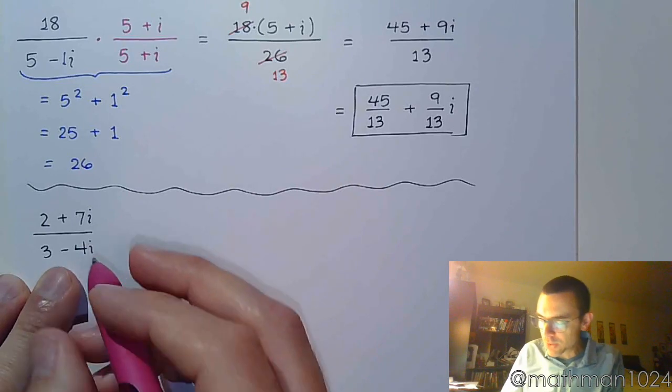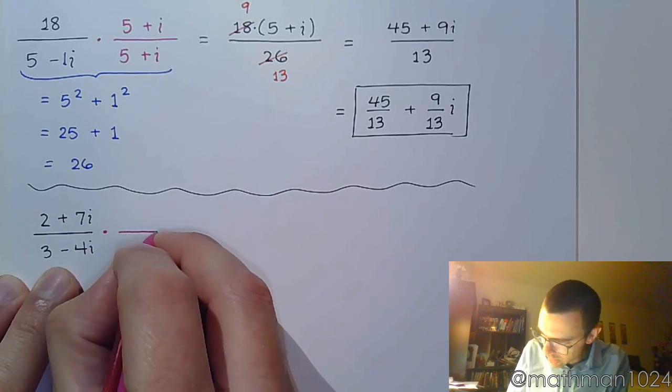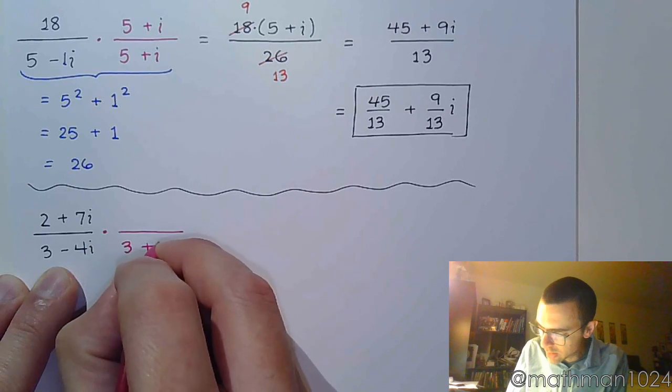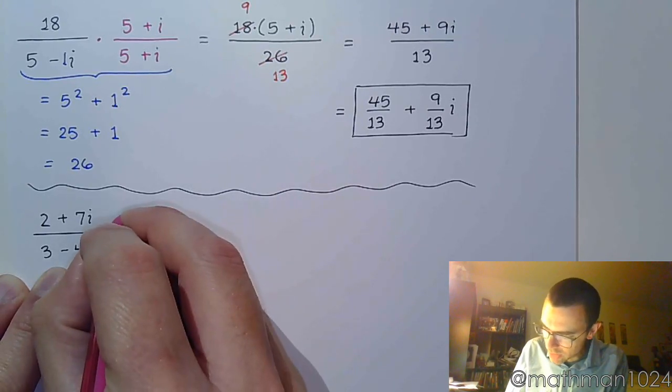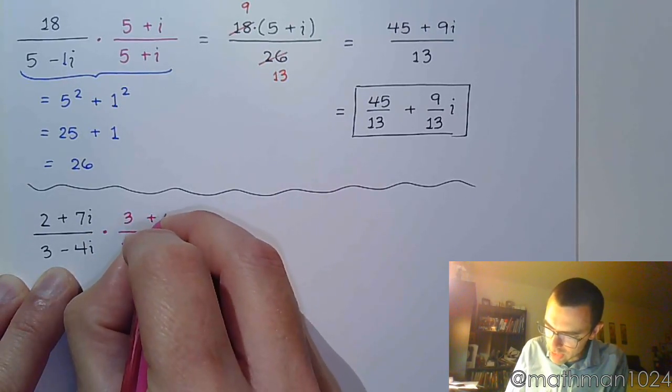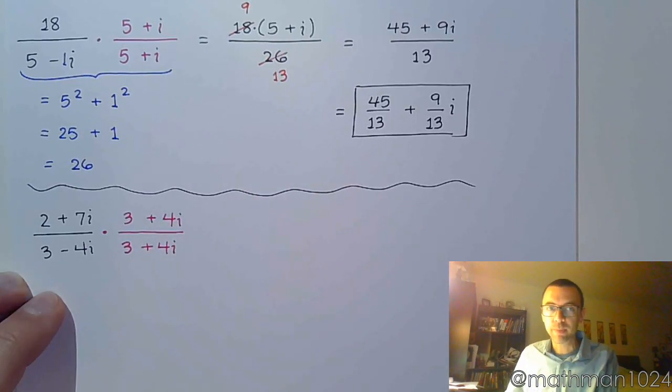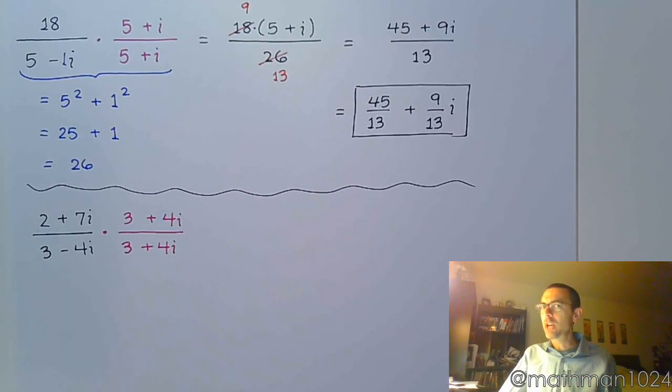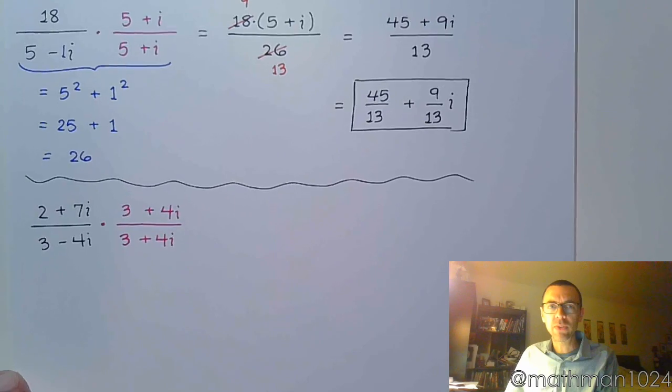Again, we use the complex conjugate. I see 3 minus 4i. The complex conjugate for this is 3 plus 4i. So do that in both the numerator and the denominator like this. Now, the numerator is going to be a bit of a problem, but let's go ahead and take care of that denominator.